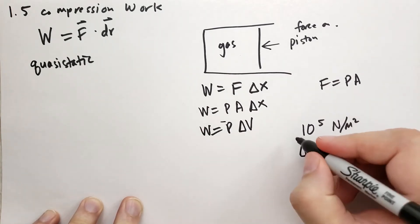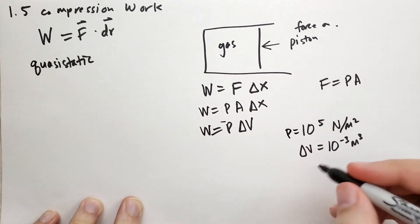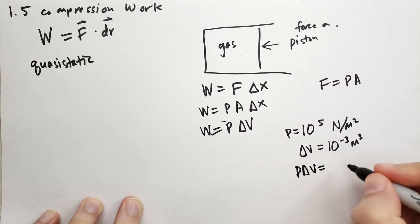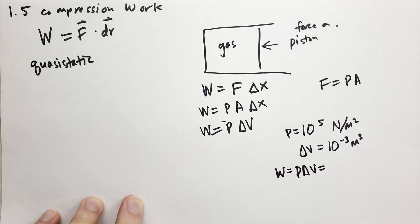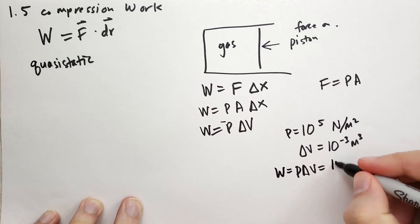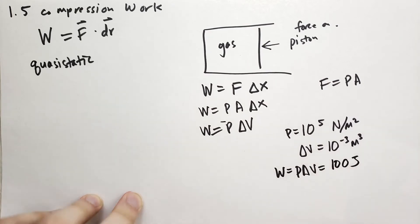We have, and we maintain the constant pressure. The pressure doesn't change as we do this. Then the work done on the gas, which is just the pressure times the change in the volume, is going to be 100 joules. So 10 to the minus third times 10 to the fifth, that's just 100 joules. So that's 100 joules of work to change the volume of that gas without increasing the pressure.